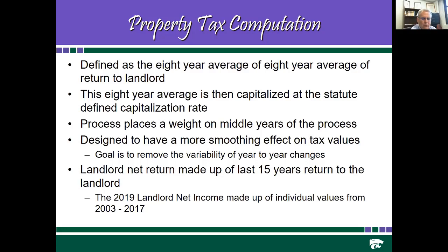The process places a weight on the middle years. The 2019 landlord net income, which came out in March with regards to the evaluations, uses the entire period of information from 2003 to 2017, and the midpoint gets the most weight. The midpoint right now is 2010, so that is going to be the heaviest weight in the formula.